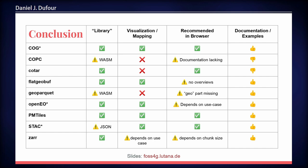For the others, it depends on the use case. For cloud-optimized point clouds, the documentation is lacking — you'd need to dig into the library and understand it deeply, otherwise it's hard to implement. For FlatGeoBuf, the issue is that if files get large, you don't have overviews like in COGs, so you can't get a more generalized instance of your vector data. For GeoParquet, it's implemented but the geo part is missing in the library, so there's no special geometry handling — you'd still need to add the geo part to the parquet-wasm library. For OpenEO, it depends on the use case. For Zarr, the chunk size is an issue — for some Zarr files chunks are very large and don't handle well in the browser, but if you can optimize chunk sizes to be small enough, it actually works pretty well.